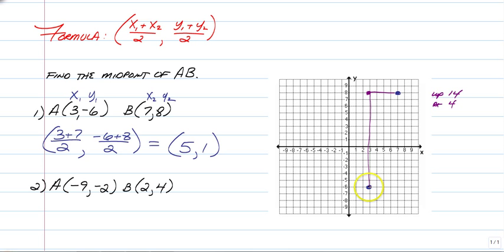So now I'm just going to go up 7 and right 2, and as you can see, there's my midpoint, 5, 1.